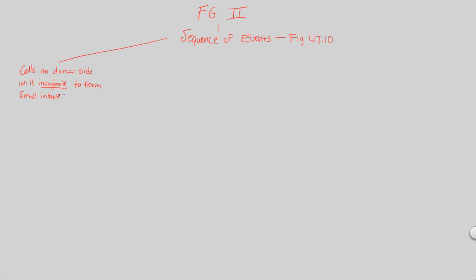That small indented crease will develop and give rise to the blastopore — another characteristic highlight. Right above this small indented crease called the blastopore is a structure to keep in mind for a bit later: it's called the dorsal lip. Right above the crease, you're going to have this structure called the dorsal lip. More on that later.